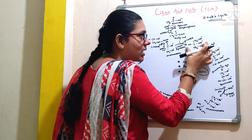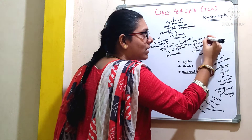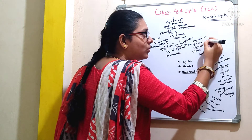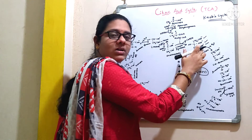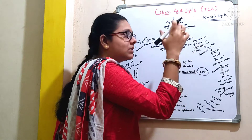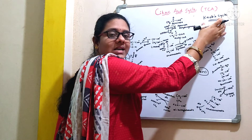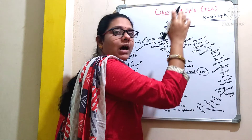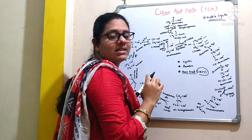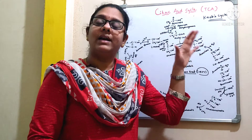Just look at the structure here: 1, 2, 3 — it contains 3 carboxyl groups. So that is the reason we are calling it as a tricarboxylic acid cycle.